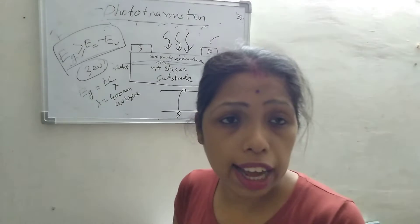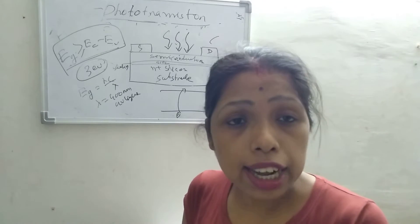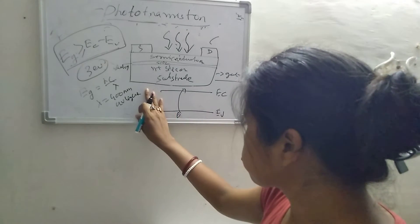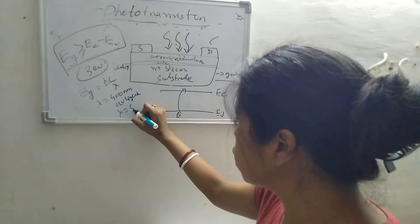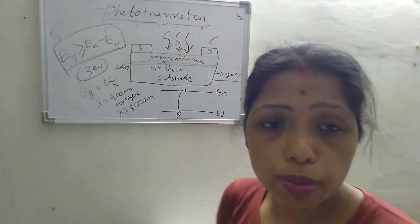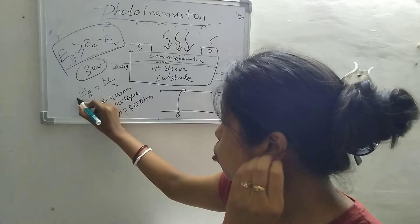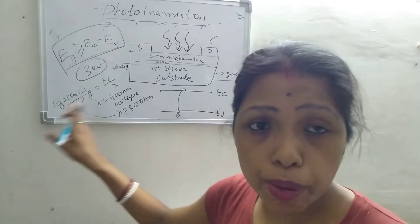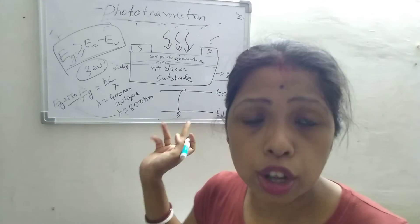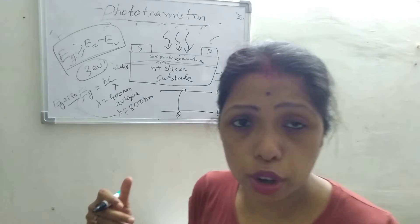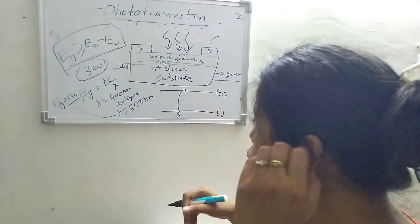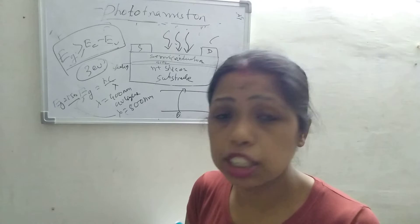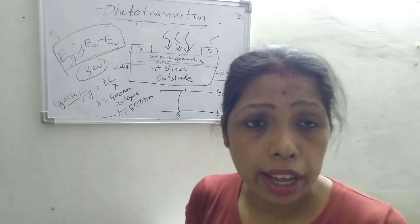What will happen if higher wavelength light is incident on the same semiconductor? Does an electron-hole pair produce? No. Suppose lambda is 800 nanometers — higher wavelength light. By using this formula, you will get EG equal to suppose 1.5 electron volts. But the band gap of the semiconductor is 3 electron volts, so 1.5 is less than 3 electron volts. Then you will not get any electron-hole pairs. So does this same semiconductor act as a phototransistor?